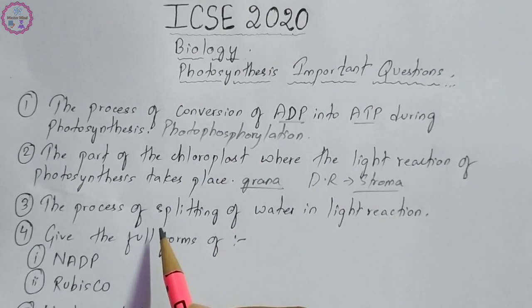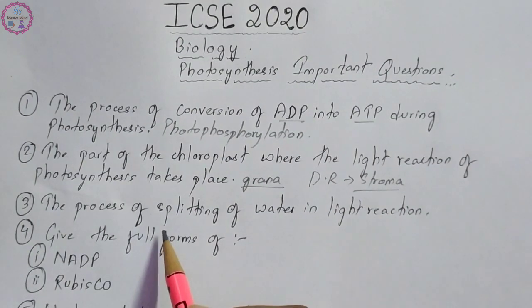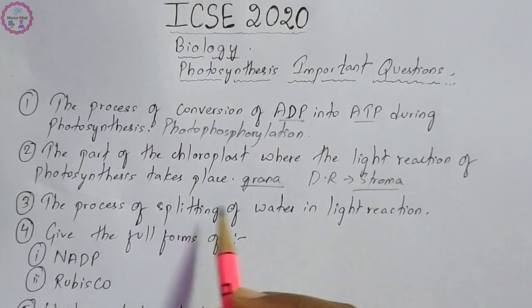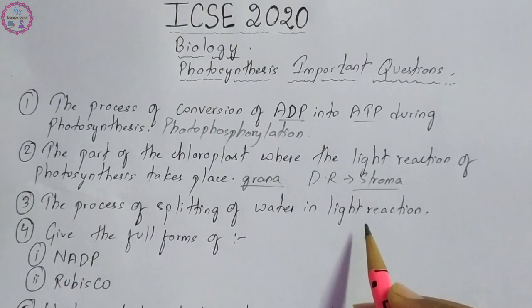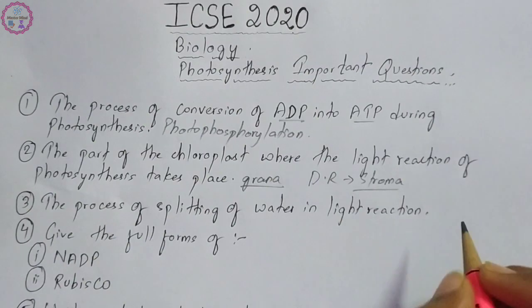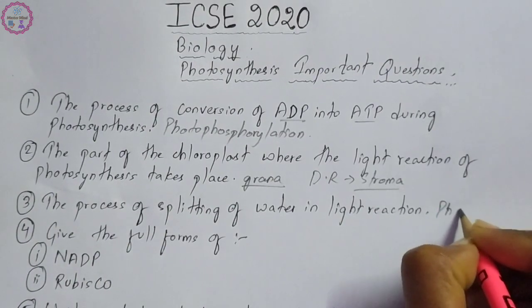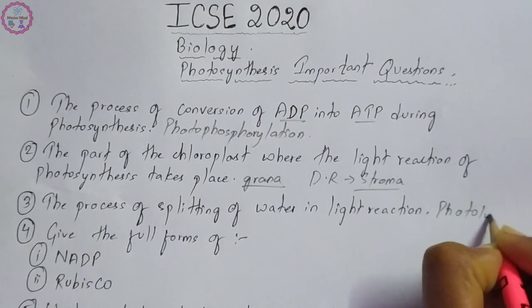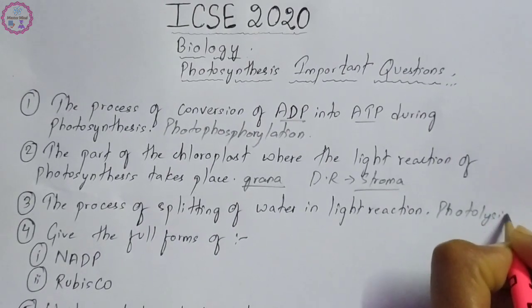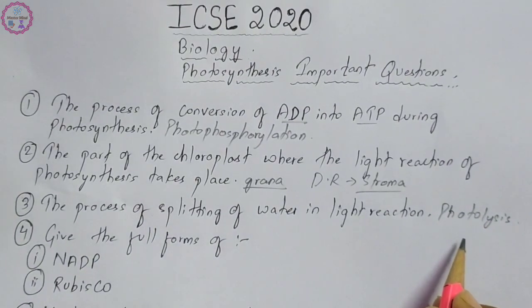The next question is again name the following: the process of splitting of water in light reaction. The process of splitting of water in light reaction is known as photolysis.